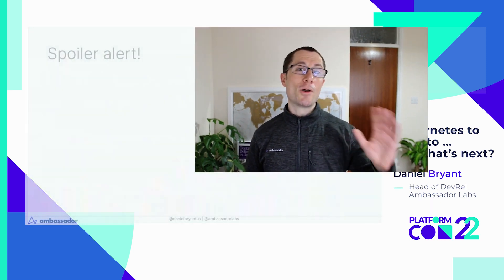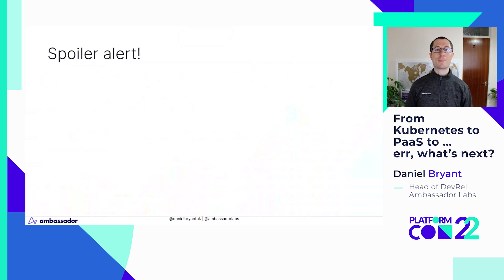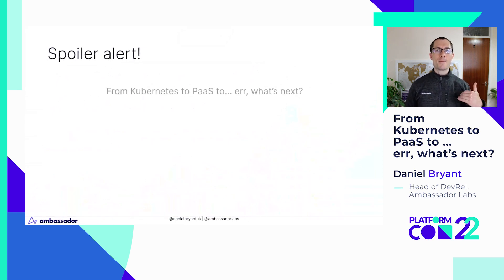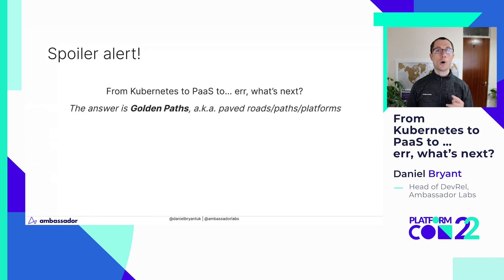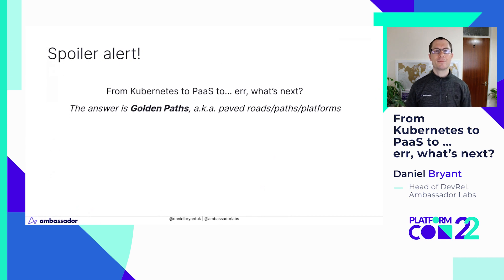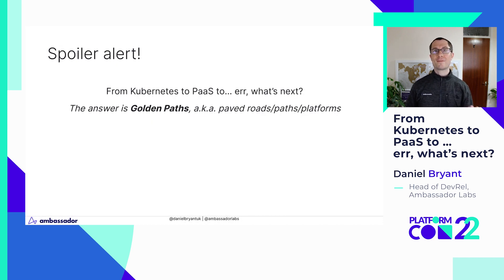I'm going to do a spoiler alert because it's only a 15-minute talk — I'm going to dive straight into my main premise. I posited 'From Kubernetes to Platform as a Service to Err, What's Next,' and I think the answer is golden paths, also known as paved roads, paved paths, paved platforms. I think this is the next evolution, the next generation of platform as a service.